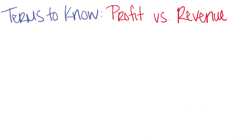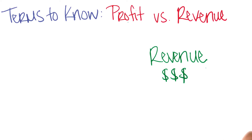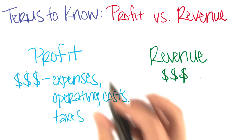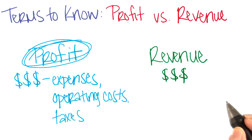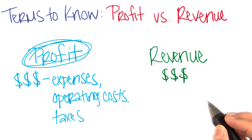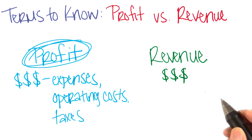Now, we've already spoken a bit about the differences between the two. Revenue is the total amount of money your company collects. Profits are the most important number for you to focus on as an entrepreneur — after all, it's the only way for your business to survive.